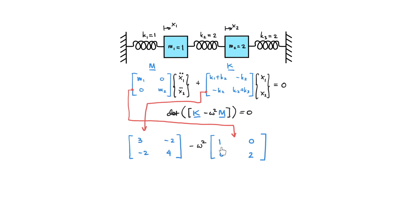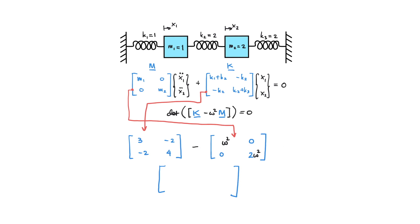Next we multiply omega squared to each element in the mass matrix. Omega squared multiplied by 1 is omega squared, omega squared multiplied by 0 is 0, and omega squared multiplied by 2 is 2 omega squared. Performing element-by-element subtraction, what we have is 3 minus omega squared, minus 2, minus 2, and 4 minus 2 omega squared.